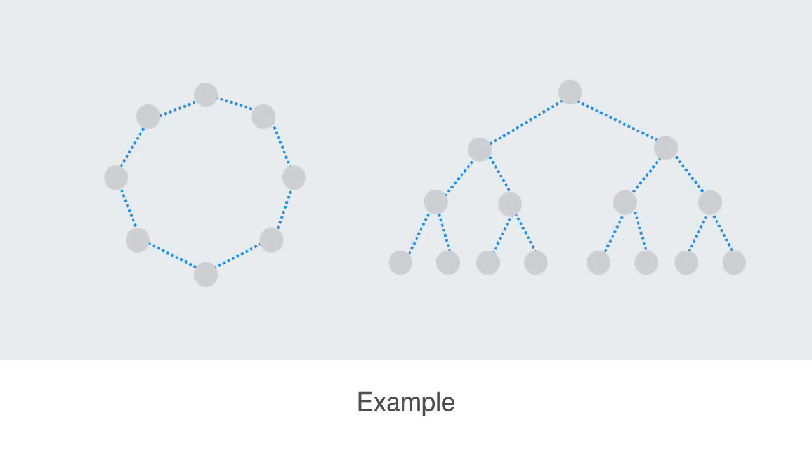Looking at these two network topologies will help to demonstrate this. If we look at the diameter of the ring network on the left, we'll see that it is quite high. In fact, it is half the number of nodes in the network. If we look at the tree network on the right, we see the diameter is much shorter due to this branching structure to the network, which is a much more efficient way of connecting things.